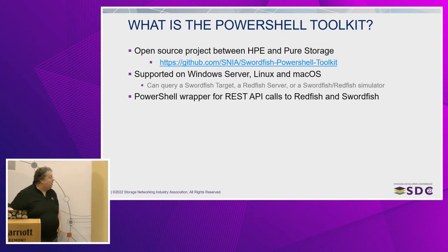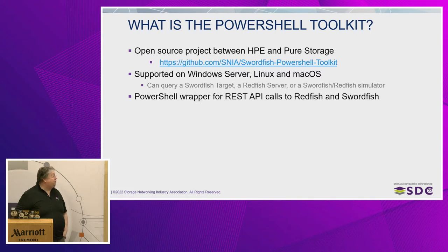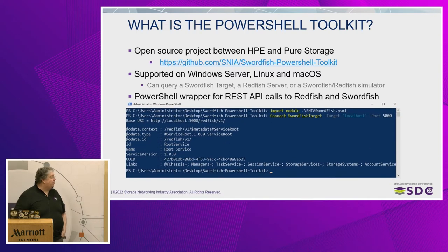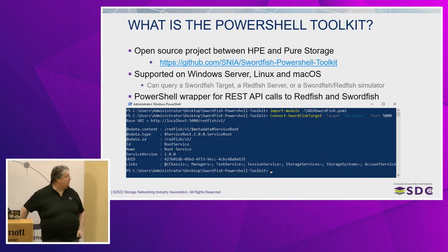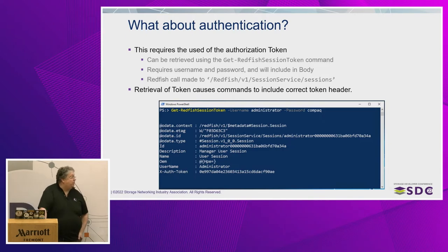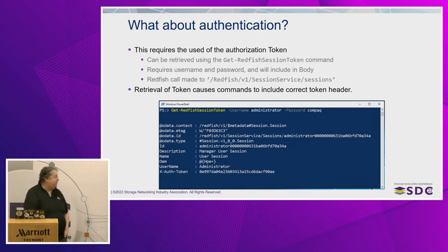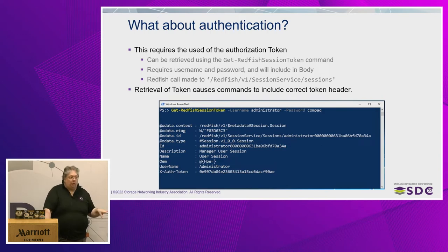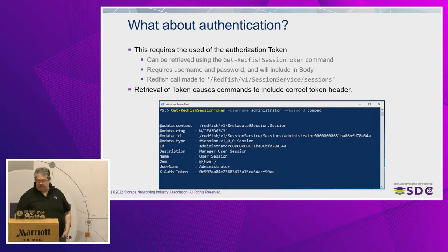The PowerShell toolkit is something I wrote in conjunction with my partner at Pure. It's supported on Windows, Linux, and Mac, and makes a REST API wrapper that gives you a CLI to call an array or server and make simple queries without having to understand any of the REST language. You import the module, do connect-swordfish target, put the IP address in, and it gives you the Redfish root. Once you've done that, you authenticate by grabbing a session token with get-redfish-session-token, providing username and password — it returns your token and throws it into a global variable that all subsequent commands will use, so every future command will include the proper token.